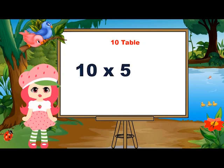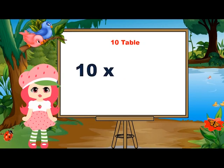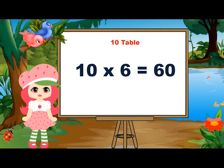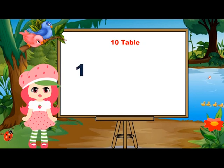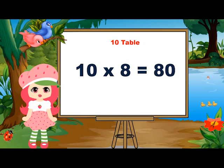10 fives are 50. 10 fives are 50. 10 sixes are 60. 10 sixes are 60. 10 sevens are 70. 10 sevens are 70.